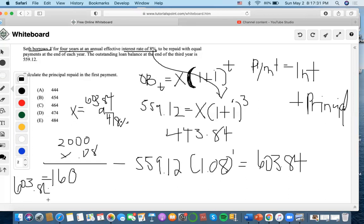Now let's subtract to find the principal. We do $603.84 minus $160 and we still get $443.84, which is choice A.